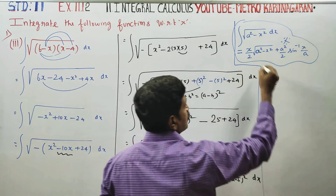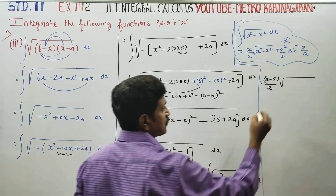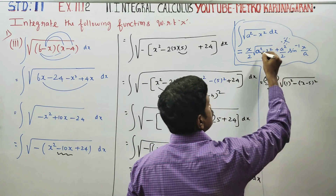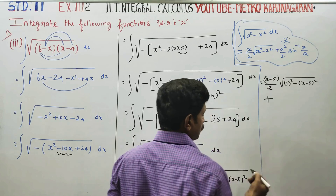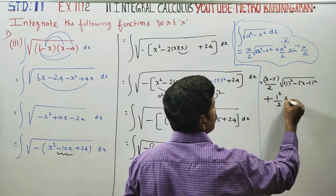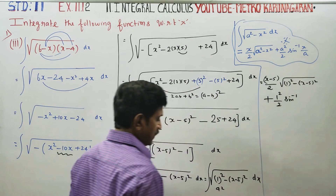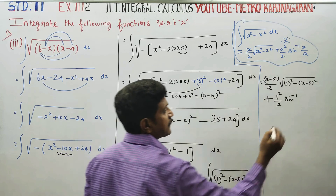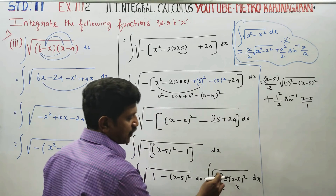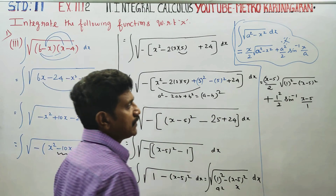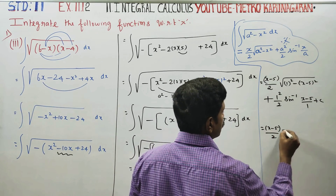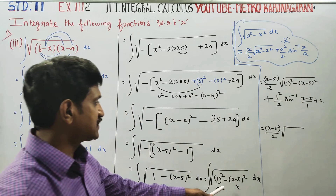Here, the square root of (x minus 5) whole squared corresponds to x in the formula, and a squared by 2 gives sin inverse of x by a. So x is this part, x minus 5 is this part, giving x minus 5 by a. The final answer plus c: it is (x minus 5) by 2 times square root of 1 squared minus (x minus 5) whole squared.